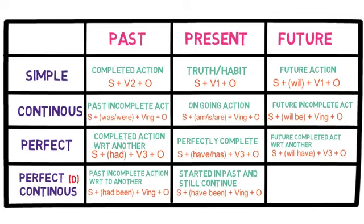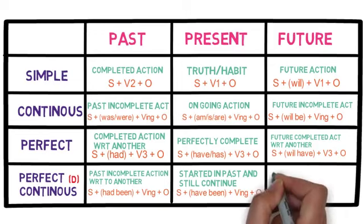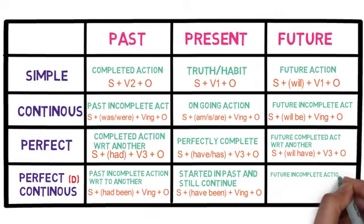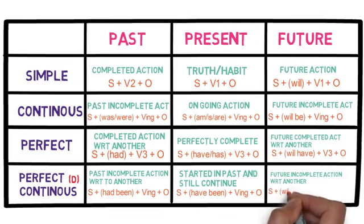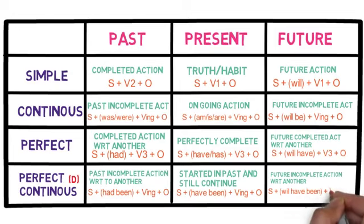In the future perfect continuous tense, we refer to future incomplete activities with respect to another, giving importance to the duration of action. The sentence structure is subject plus will have been plus verb's -ing form plus object.